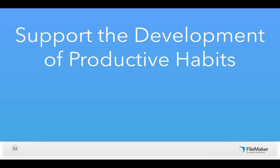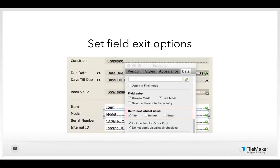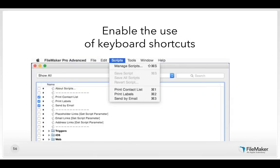Support the development of productive habits. People will develop habits for things they do every day, and those habits will either be productive or destructive. Set a logical tab order so it works within the path of completion you've designed. Set field exit options so people can exit fields in the most familiar way. Enable the use of keyboard shortcuts — in FileMaker 13, check scripts you want in the script menu, and the first 10 will have Command-1 through Command-0 on Mac or Control-1 through Control-0 on Windows.